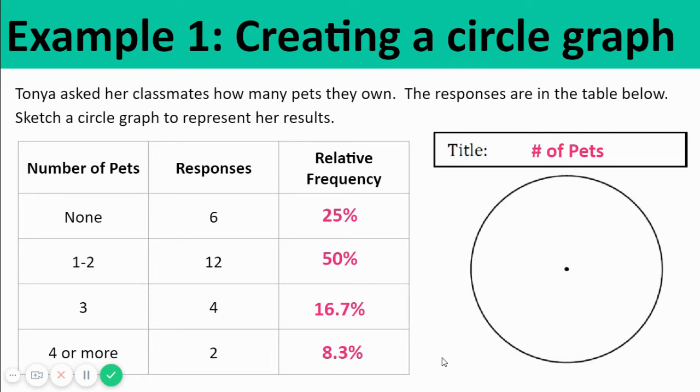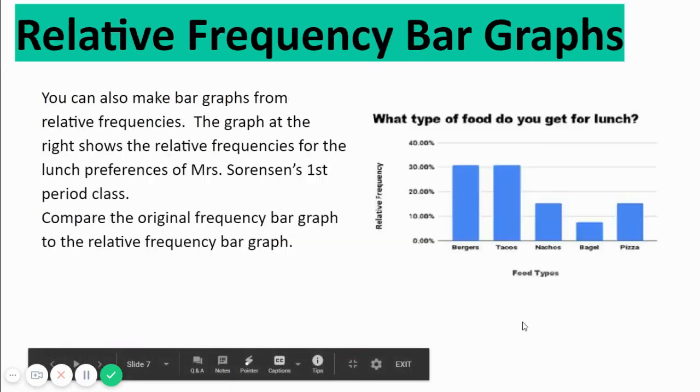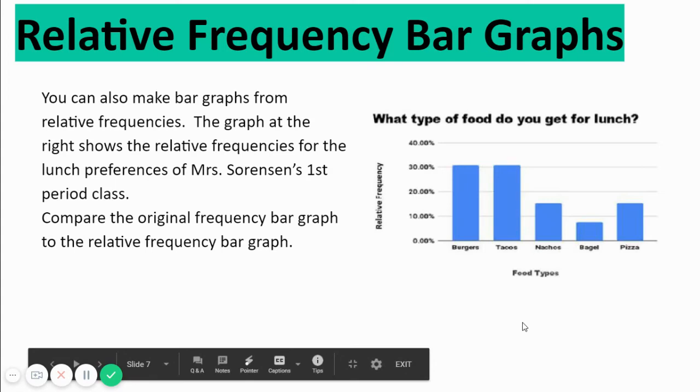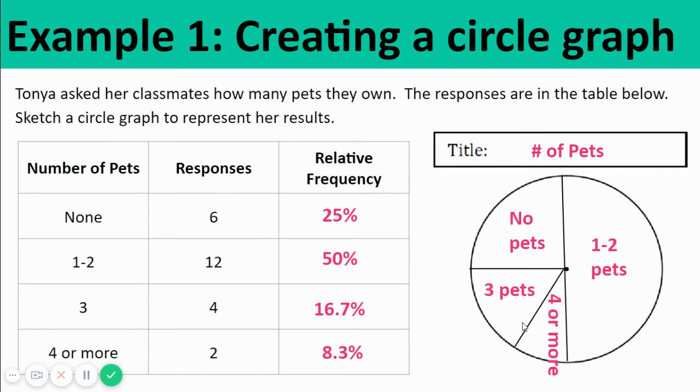We have to have a title for our graph. Number of pets. Let's divide up our pi. We want the angles to represent the fraction of the whole that we had.